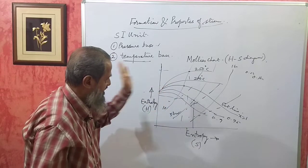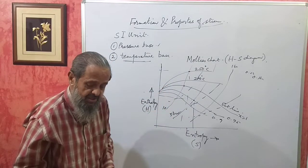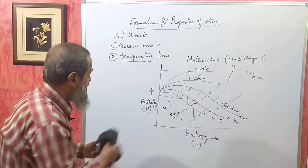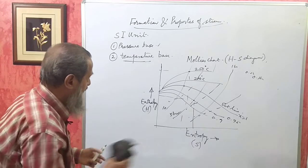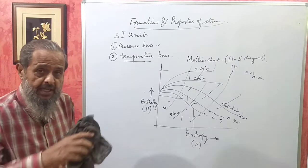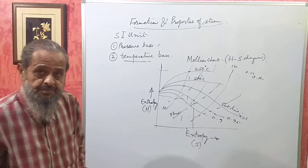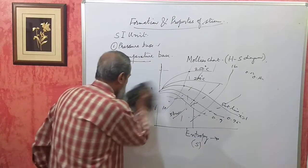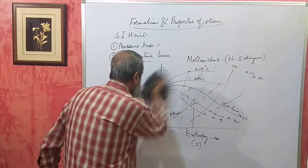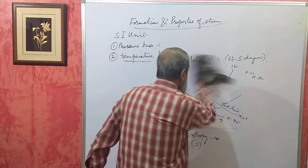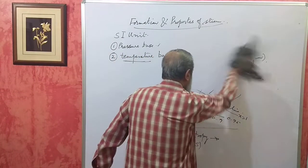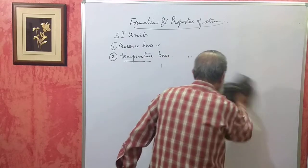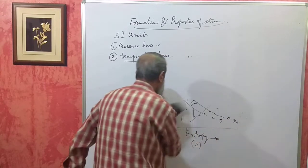You can use the Mollier chart in those cases as well. I hope I have cleared your doubt on the use of steam tables. Now I will take up a few problems so that you will learn how to solve them.